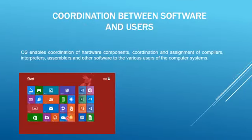Coordination between software and users is another function. The operating system enables coordination of hardware components and assignment of compilers, interpreters, assemblers, and other software to the various users of the computer. It helps manage resources like processor, memory, storage, hardware, and other peripheral devices. For example, when we click any application, the operating system simultaneously manages the resources to execute that program.